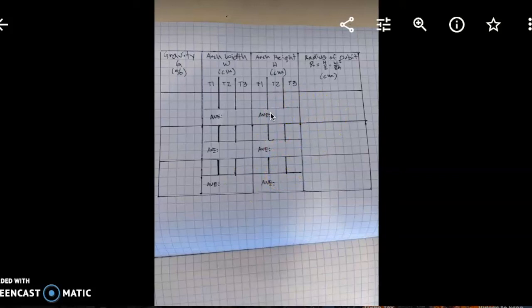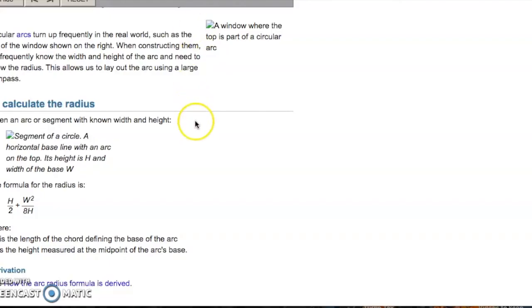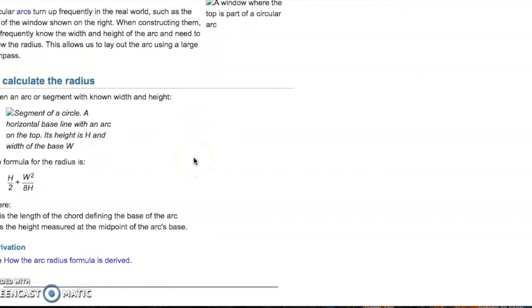Now, let's go ahead and find out how to calculate the radius from this example. Let me show you this beautiful website. Okay, so this is a formula of how to calculate the radius. The radius is going to be the average height of the three trials divided by two plus the average width of the three trials squared divided by eight and then divided by h. Again, make sure the eight and the h are in parentheses because they're both on the denominator when you're using your calculator so you would put it in and get a certain radius.